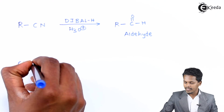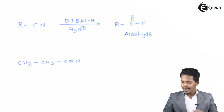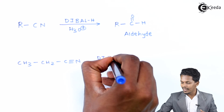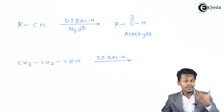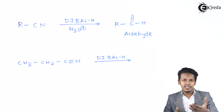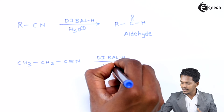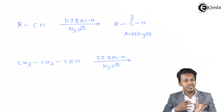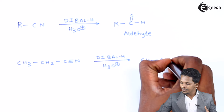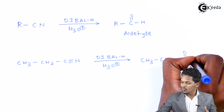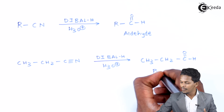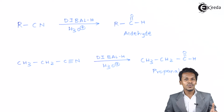For example, if we consider ethyl cyanide and it undergoes a reaction with the reducing agent DIBAL-H, it will first form a complex intermediate, and on further hydrolysis under acidic conditions it will undergo hydrolysis to form an aldehyde. The product we get is CH3CH2C double bond O-H. The total number of carbons in this case is 3, so this product is called propanal.